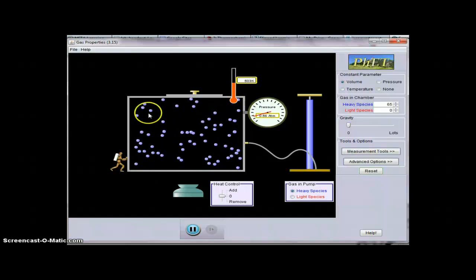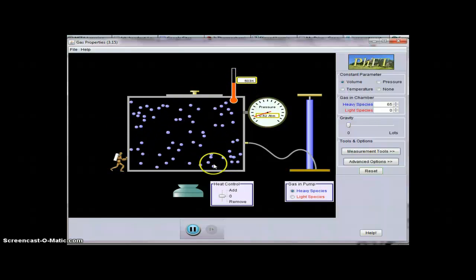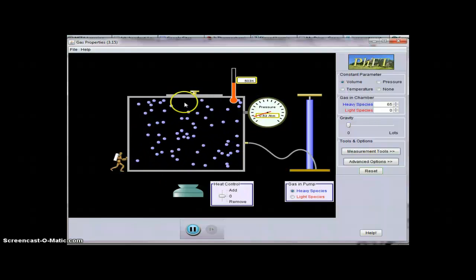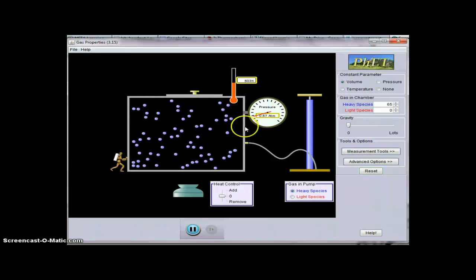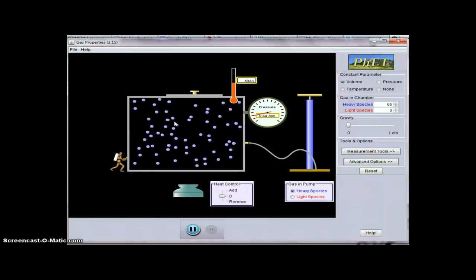Pressure is the collisions on the molecules. Temperature is how fast they're going. When you make them go faster, when they're traveling faster, it would make sense that they have more collisions with themselves and the walls of the container, therefore the pressure also increases. Keep this in mind when you're doing calculations involving Gay-Lussac's law. This is what we're really talking about.